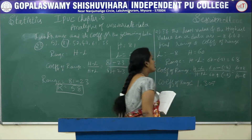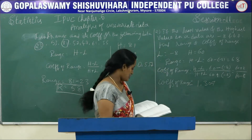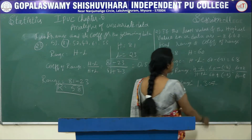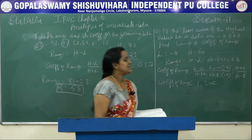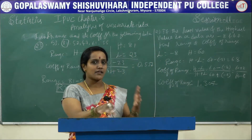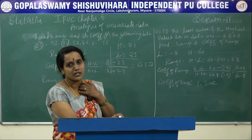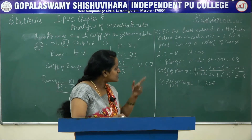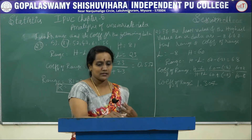The coefficient of range is 1.307. Since the lowest value has a minus sign, at last you will get a value like that.